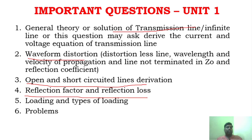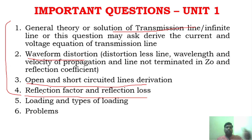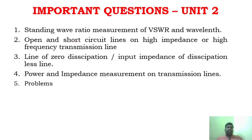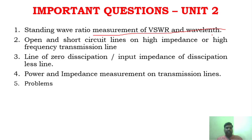Similarly, reflection factor and reflection loss are important. I have given five questions for Unit 1, but you must also practice problems — problems are very important. For Unit 2, I have given four important questions. These include: measurement of VSWR and wavelength, open circuit and short circuit transmission lines, line of zero dissipation, and input impedance of a dissipation-less line.